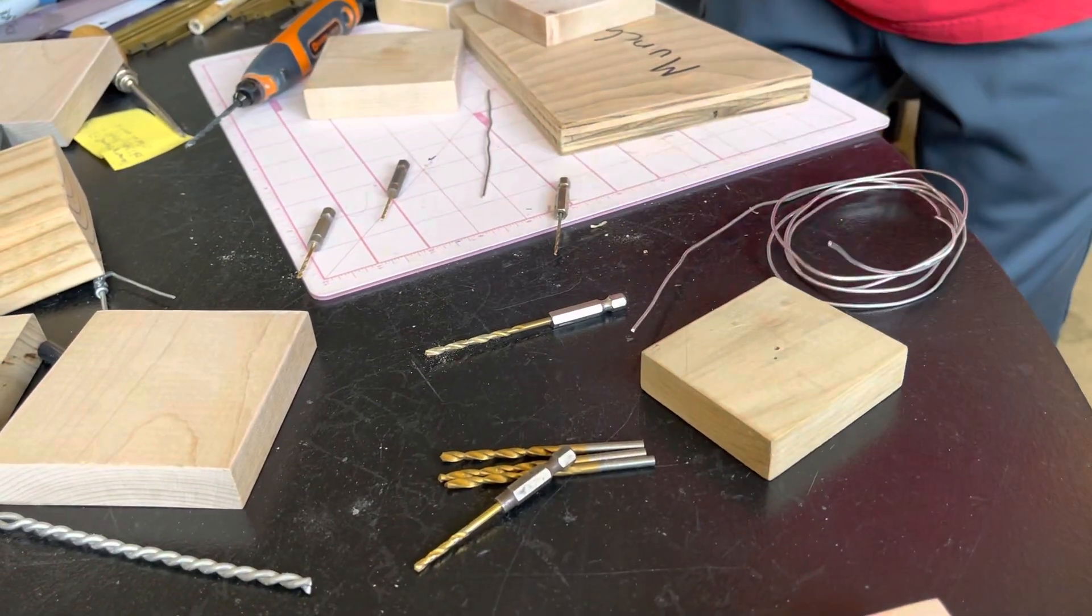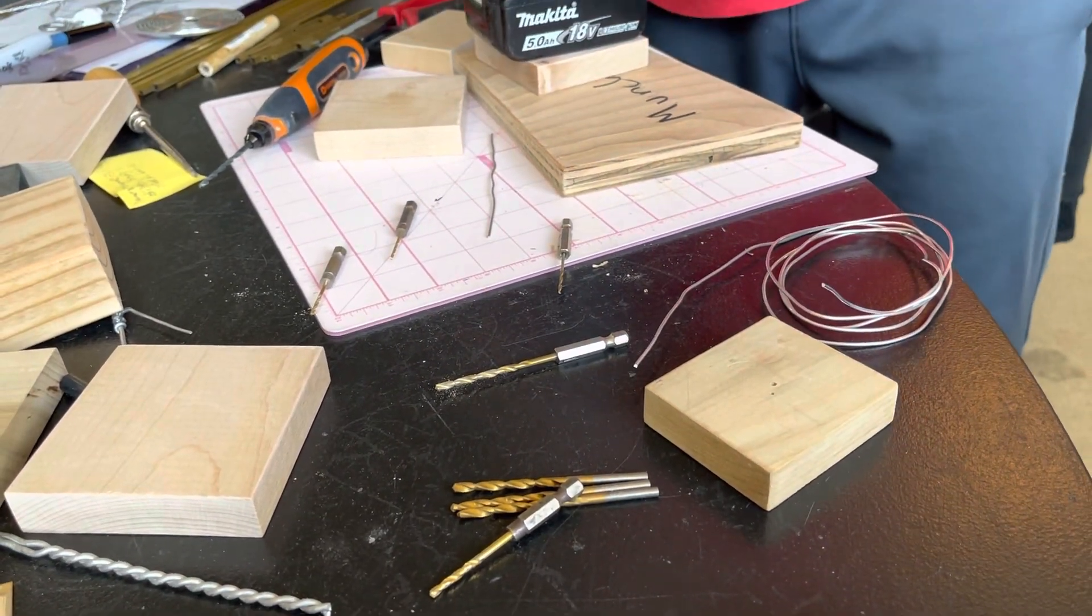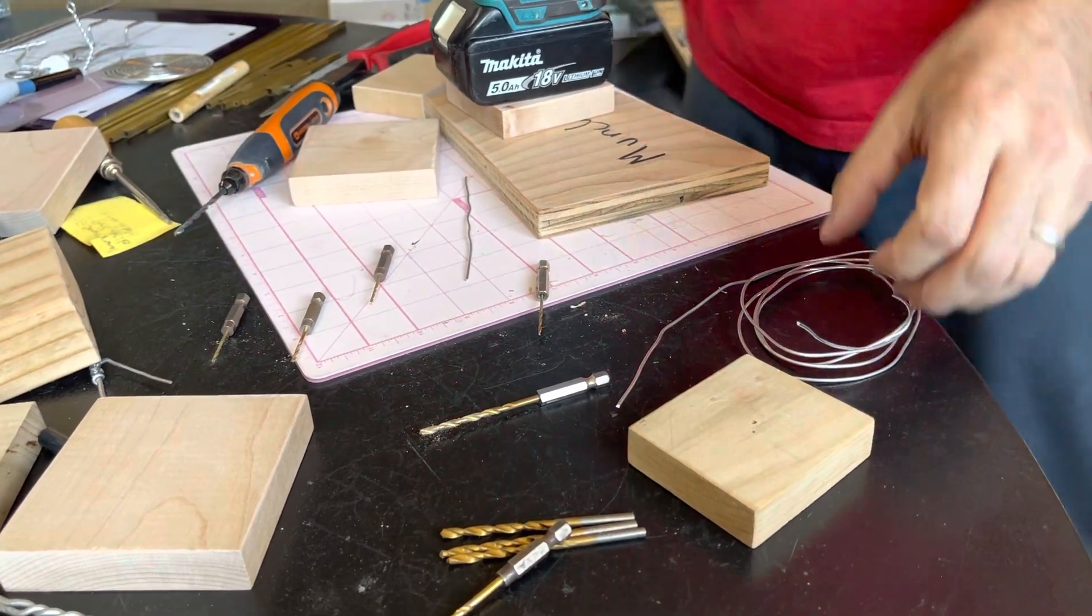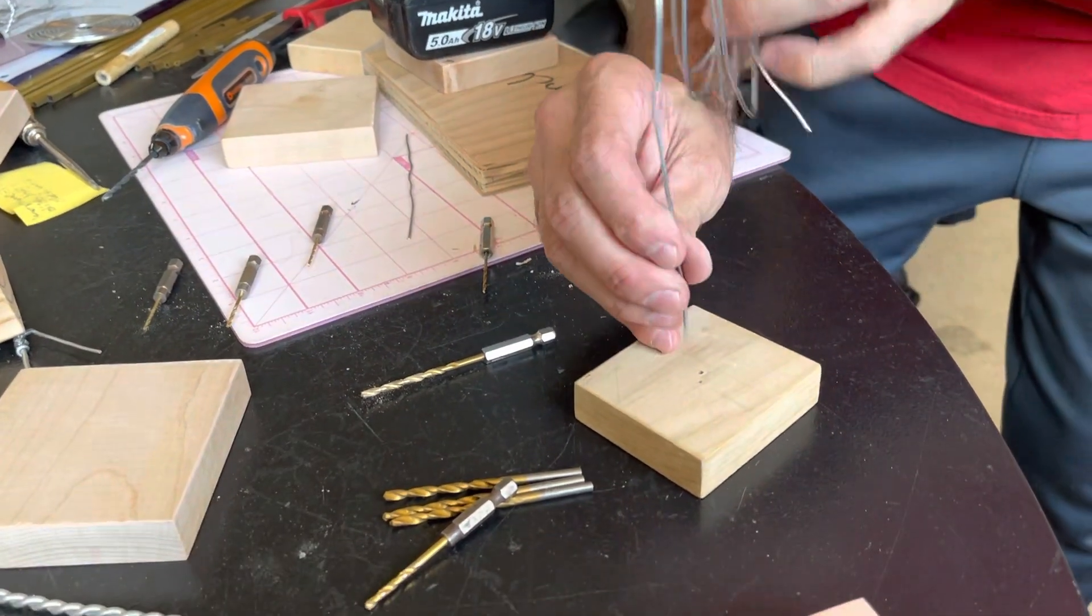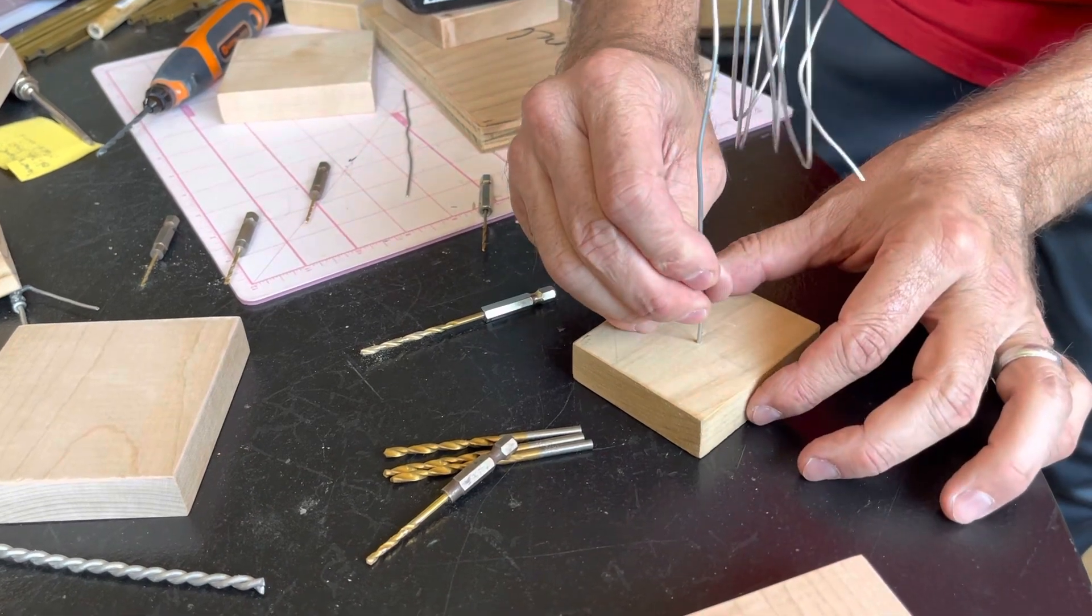You can see the size difference on the holes. There's quite a bit. 1/32nd of an inch shows up quite a bit when we're talking about diameters of things.